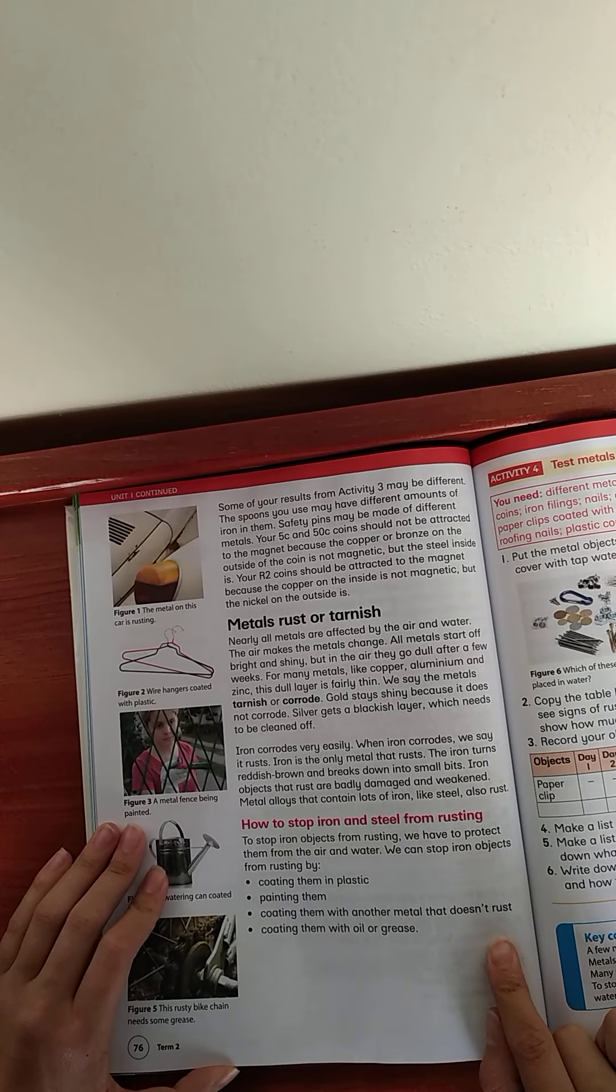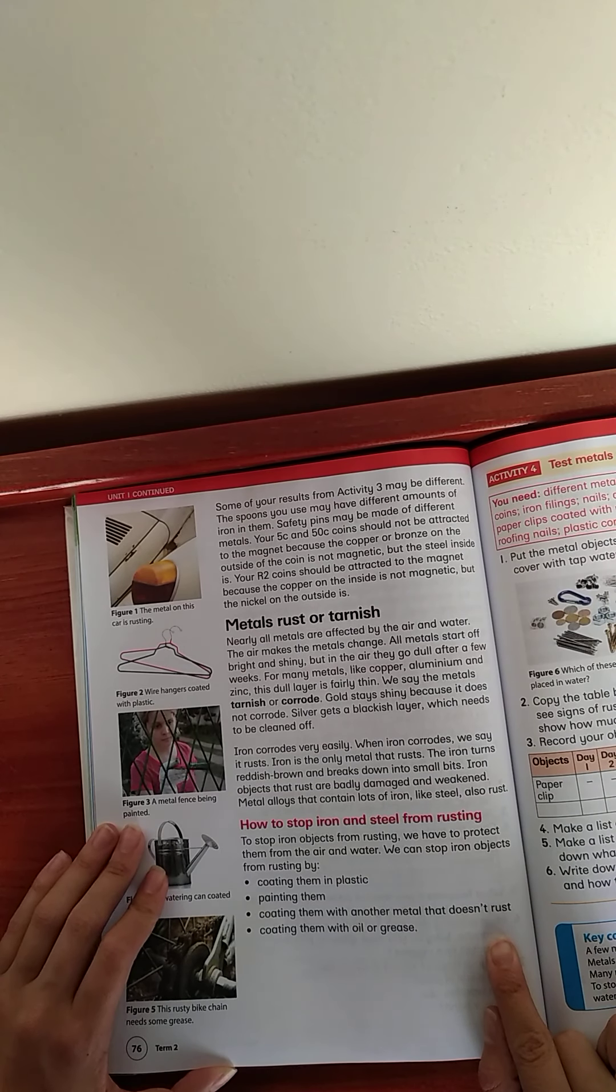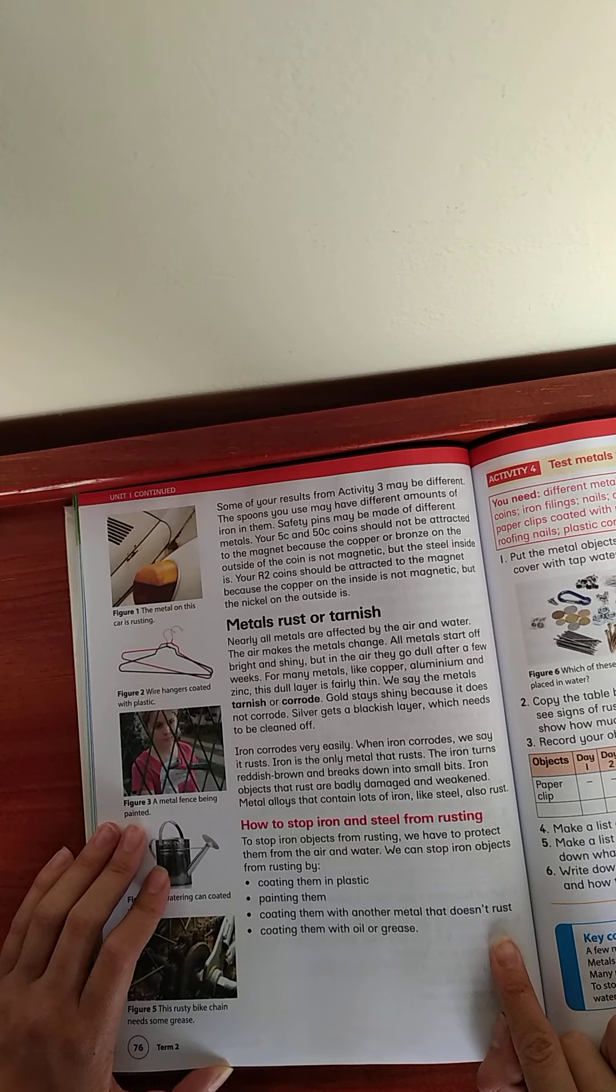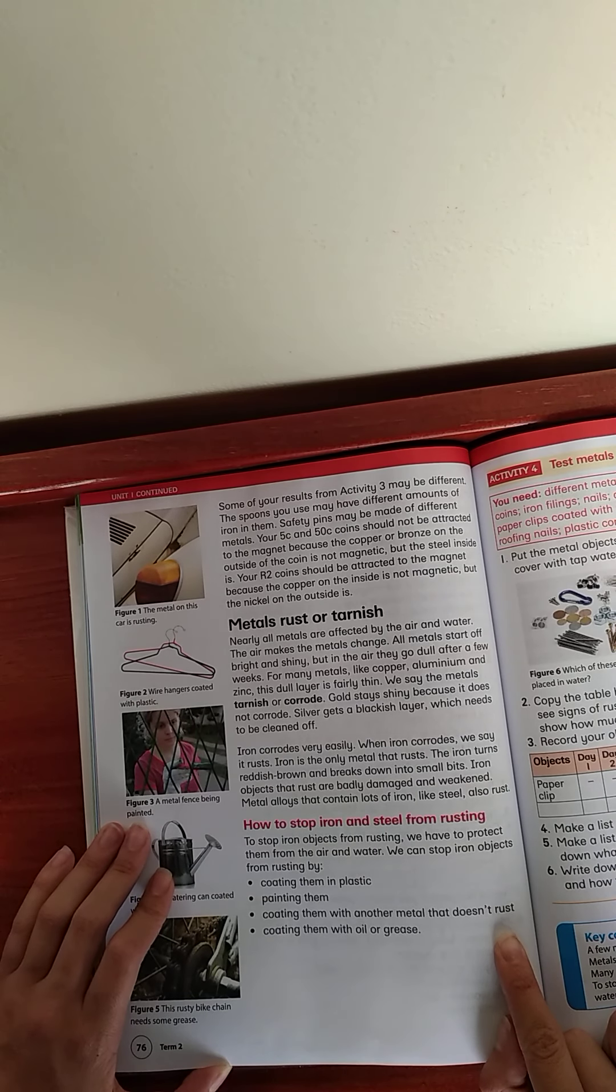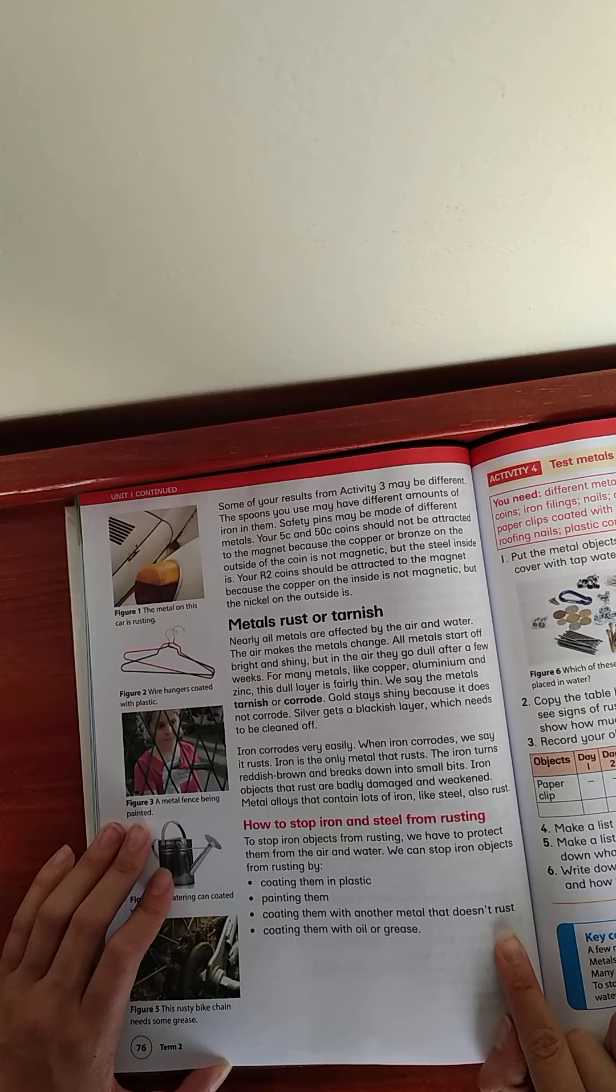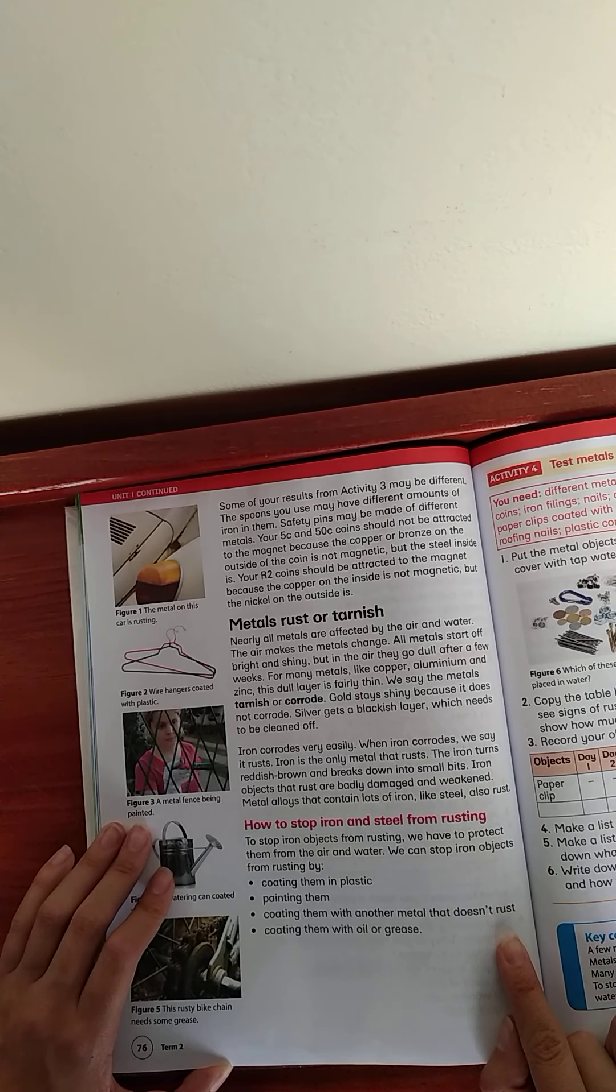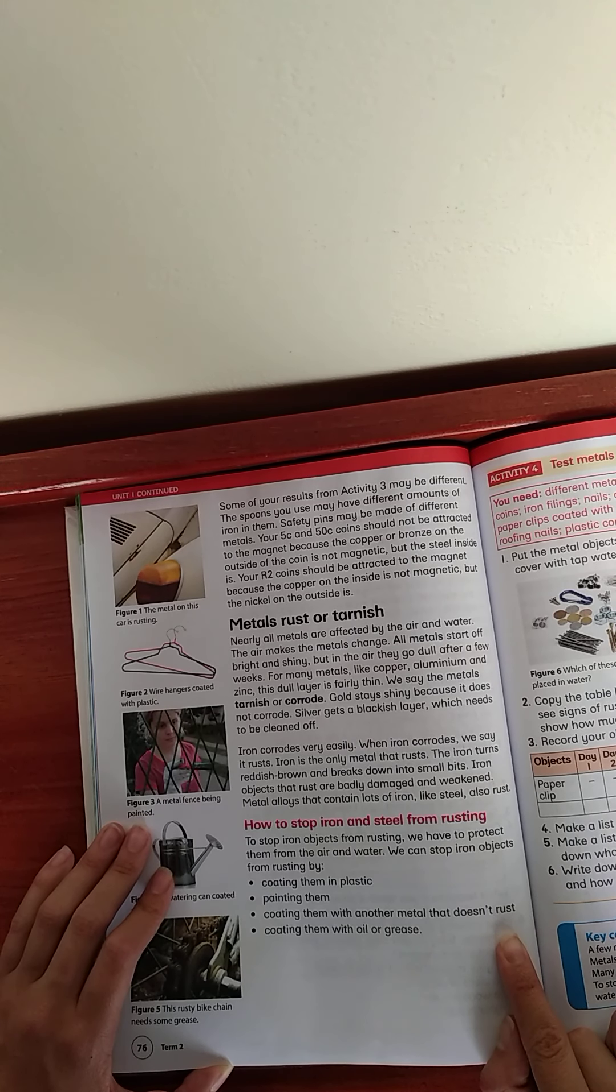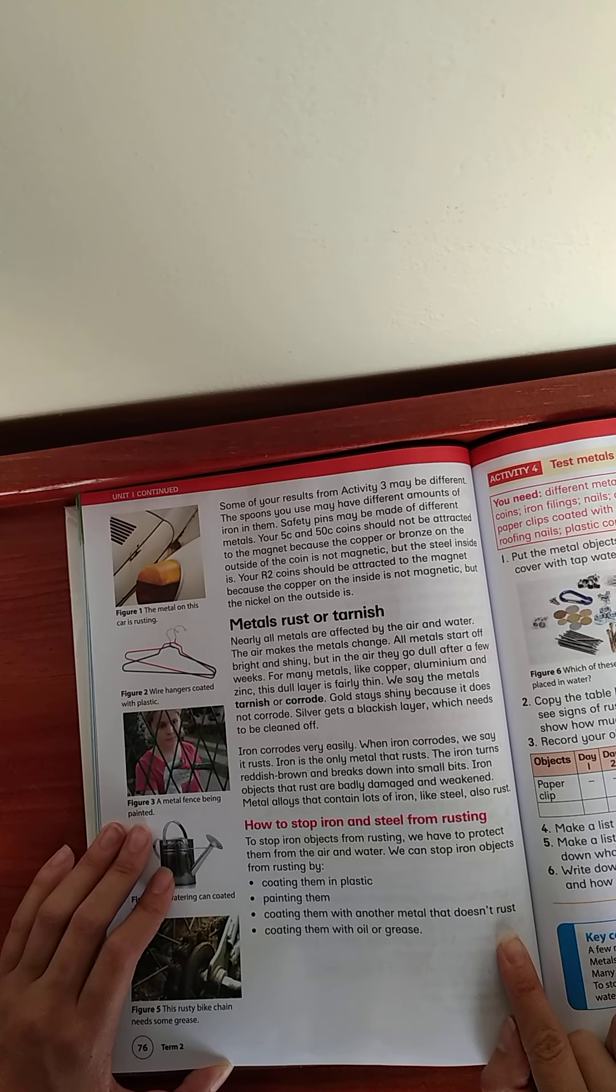Some of your results from Activity 3 may be different. The spoons you use may have different amounts of iron in them. Safety pins may be made of different metals. Your 5 cent and 50 cent coins should not be attracted to the magnet because the copper and bronze on the outside of the coin is not magnetic, but the steel inside is. Your two-rand coins should be attracted to the magnet because the copper on the inside is not magnetic, but the nickel on the outside is.